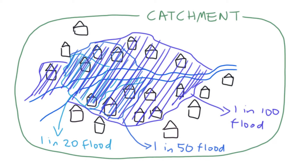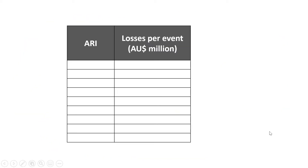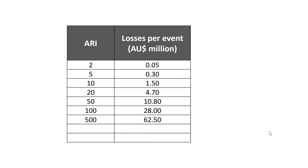The damage from floods of different average recurrence intervals in the catchment area are: for a 1 in 2 years flood, $50,000; for a 1 in 5 years flood, $300,000; for a 1 in 10, $1.5 million; 1 in 20, $4.7 million; 1 in 50, $10.8 million; 1 in 100, $28 million; 1 in 500, $62.5 million; 1 in 1000, $235 million; and the probable maximum flood, $1 billion and $530 million.